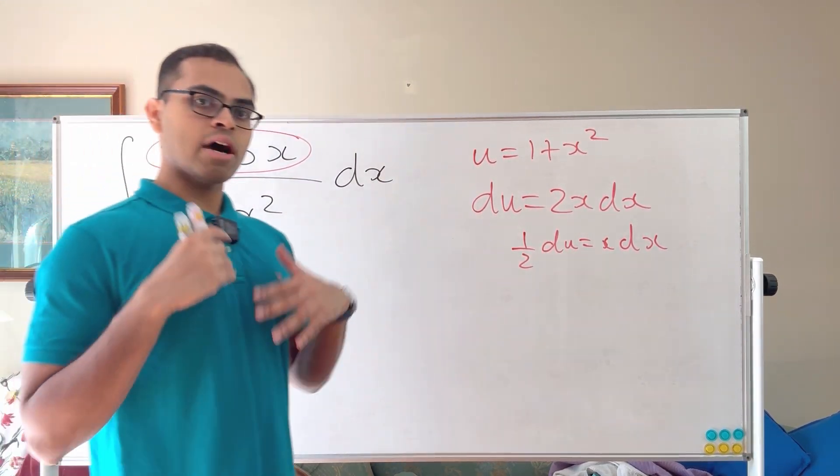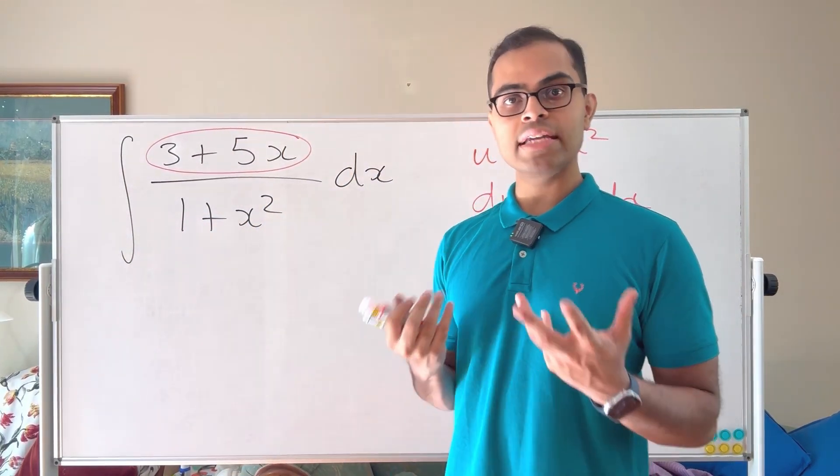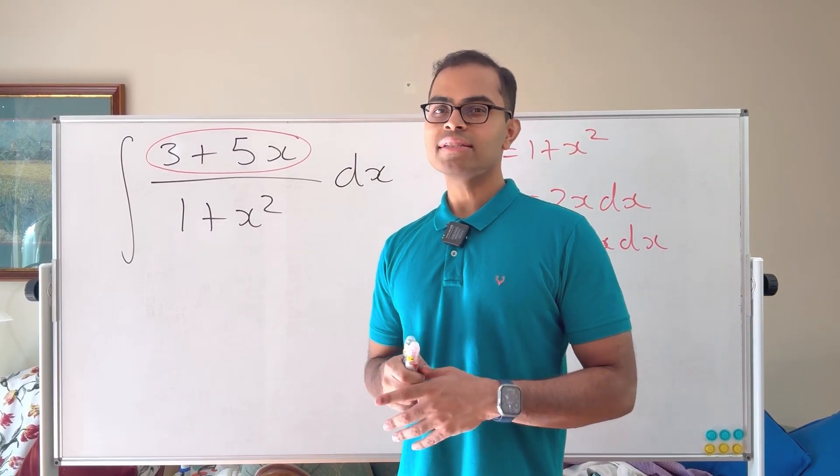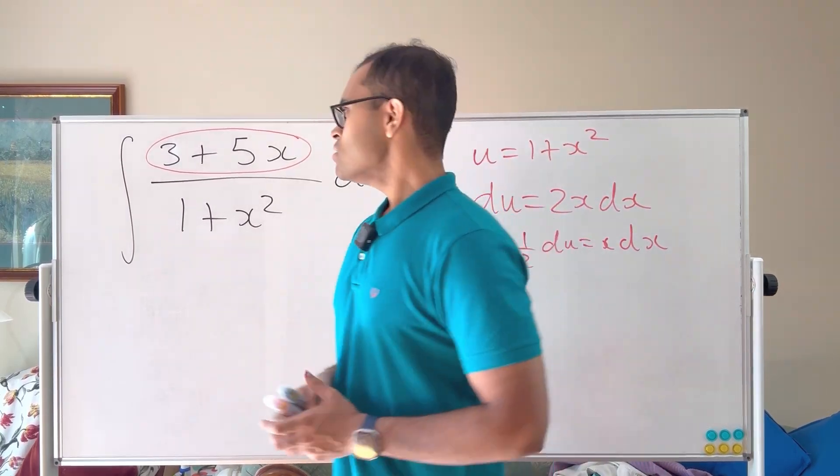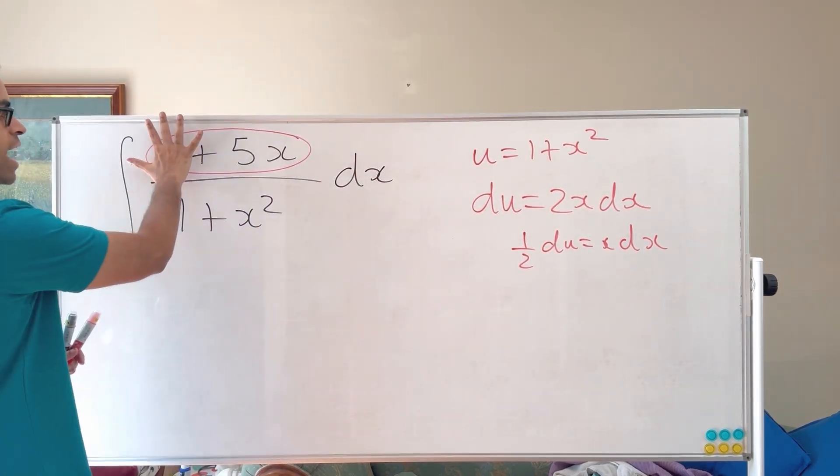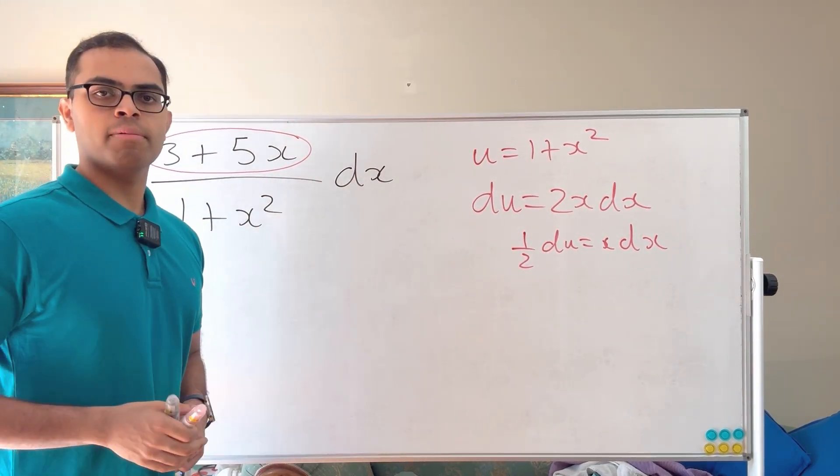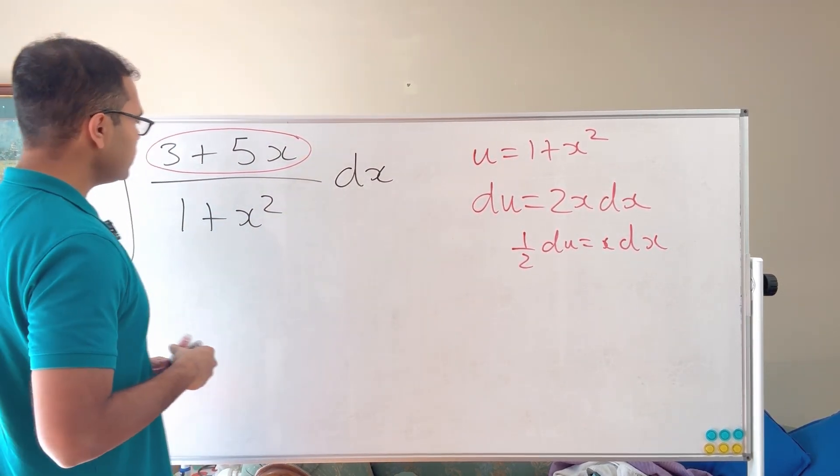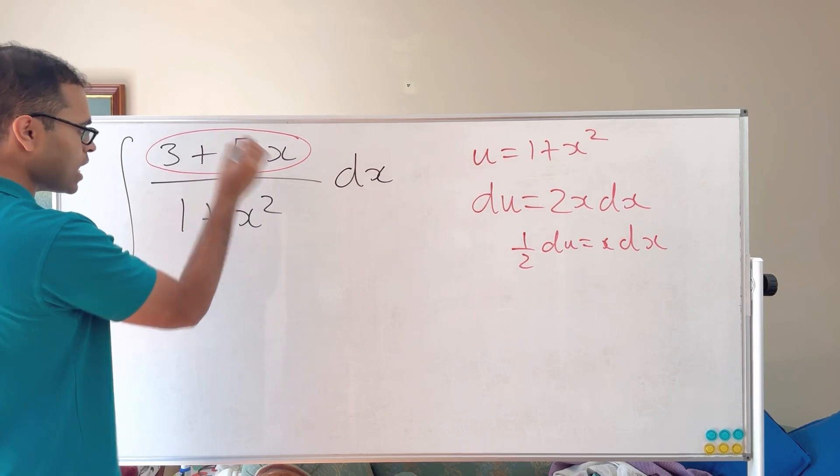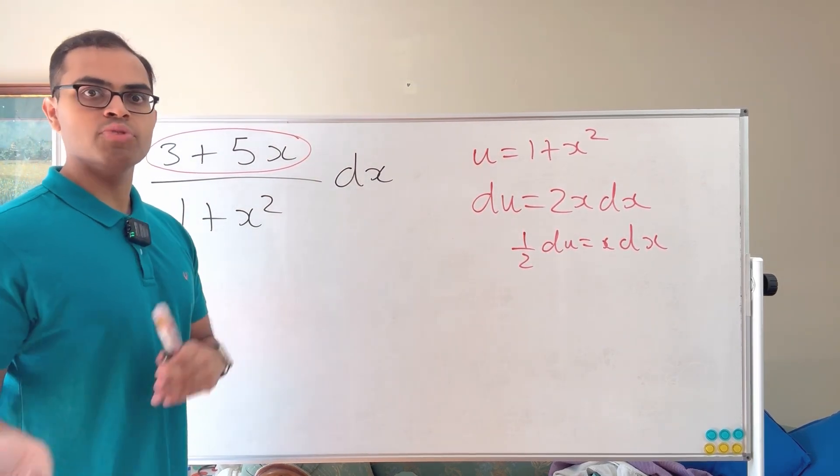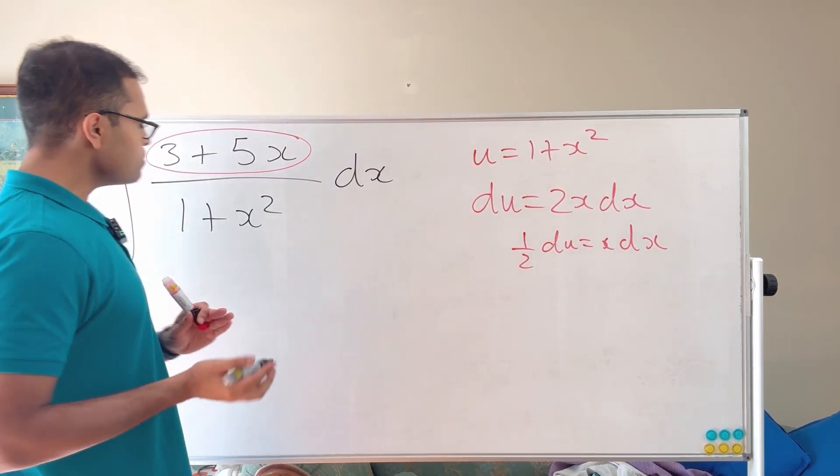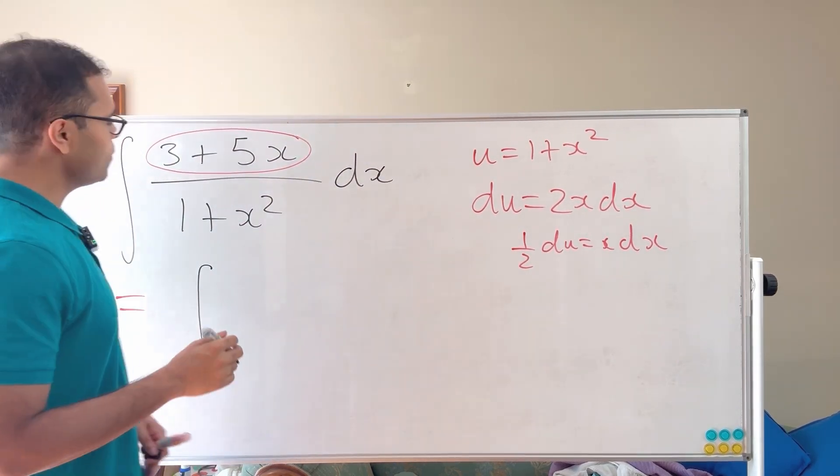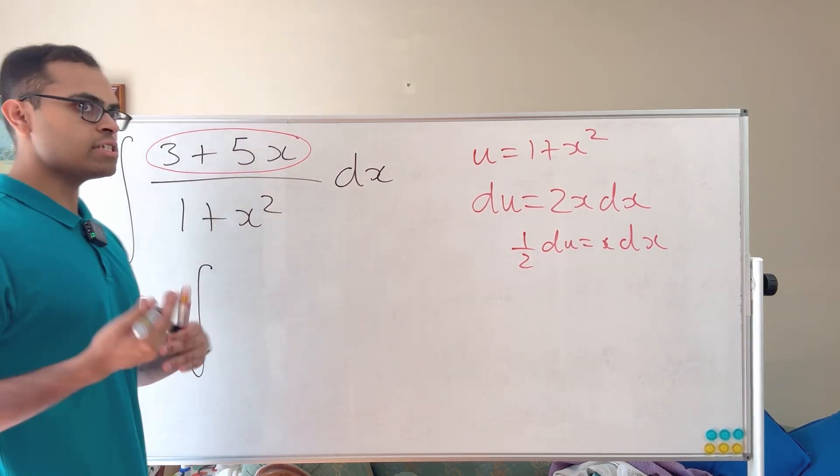So the typical thing to do when our u substitution fails is to try to simplify our integrand. Try to simplify it in some way to make the u substitution work. And sometimes with problems, you may have to apply multiple tricks. So one approach is, suppose we didn't have the 3, then we could solve the problem, right? So let's try to think about what happens there. If we didn't have the 3, we could solve it. So we're going to split up this as a sum of fractions to kind of isolate the part we can't solve and the part we can solve. Now sometimes it works in integration to split up the sum like this, sometimes it doesn't. So it's a matter of trial and error, but this is an approach, and if it doesn't work, we'll find another one.